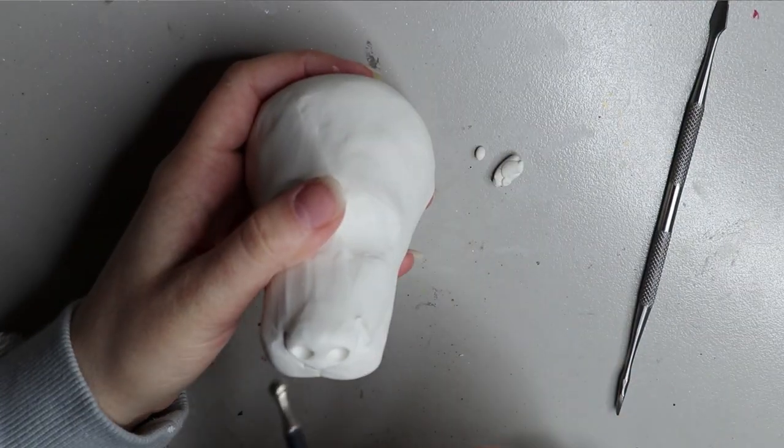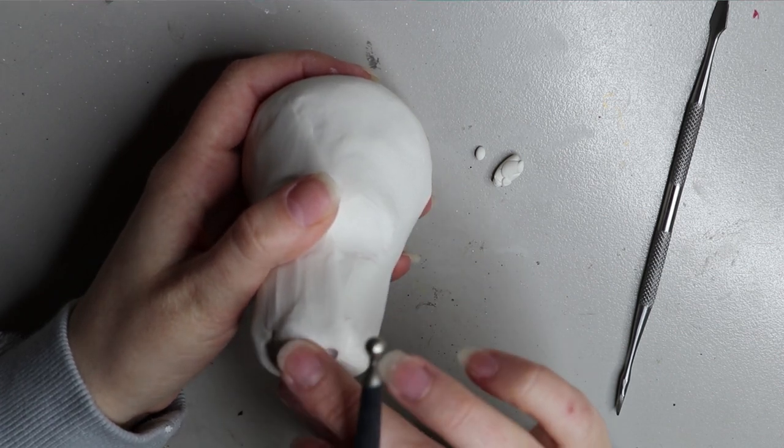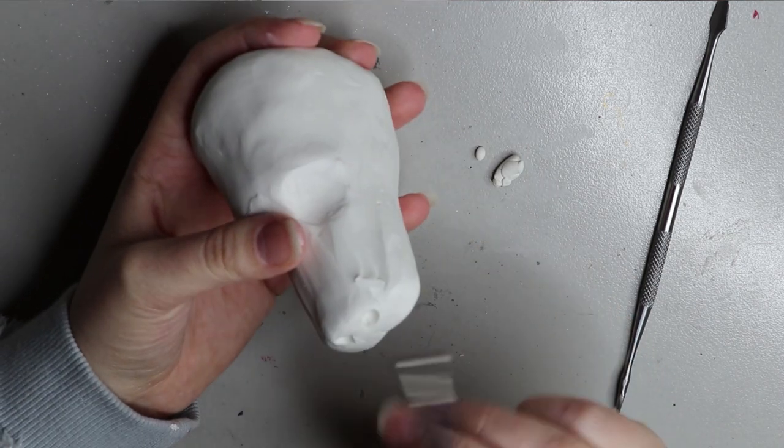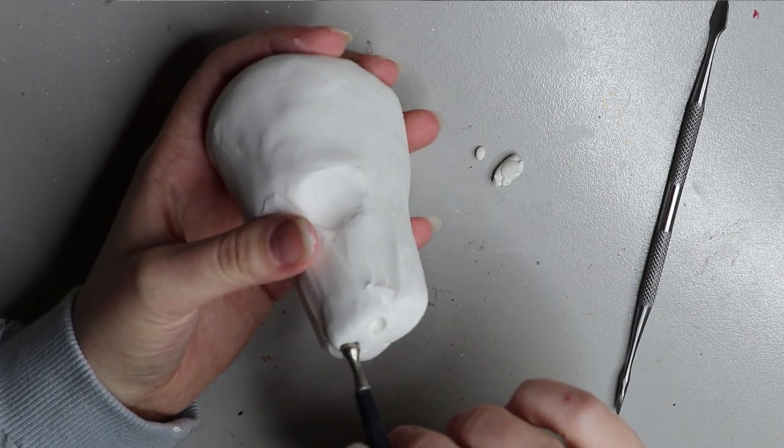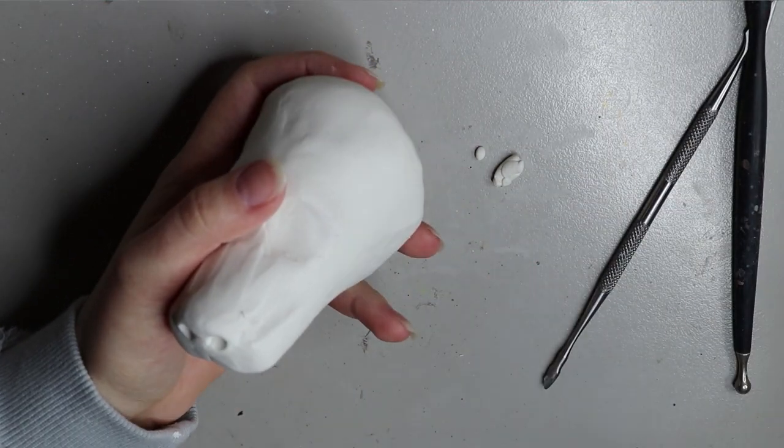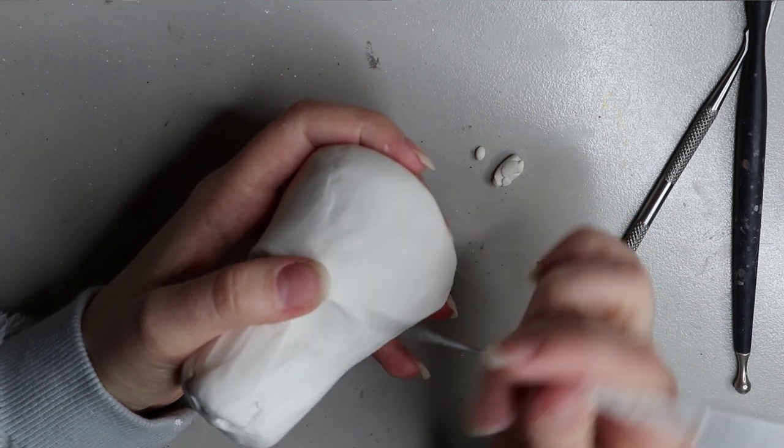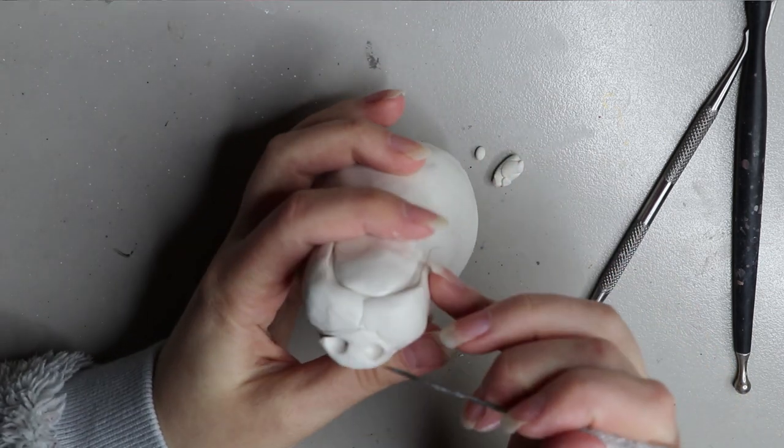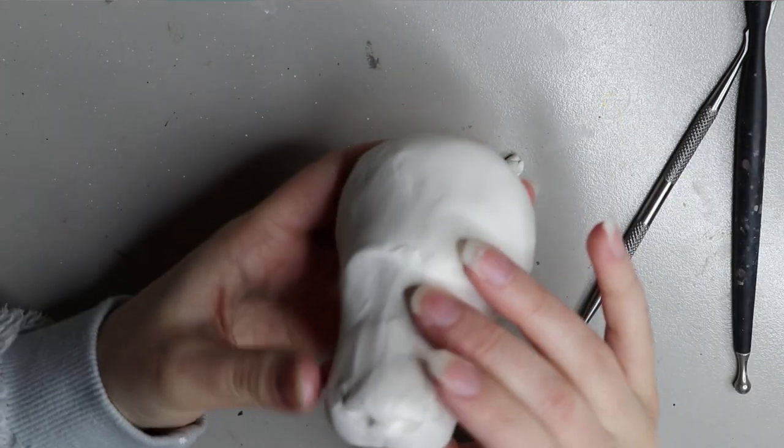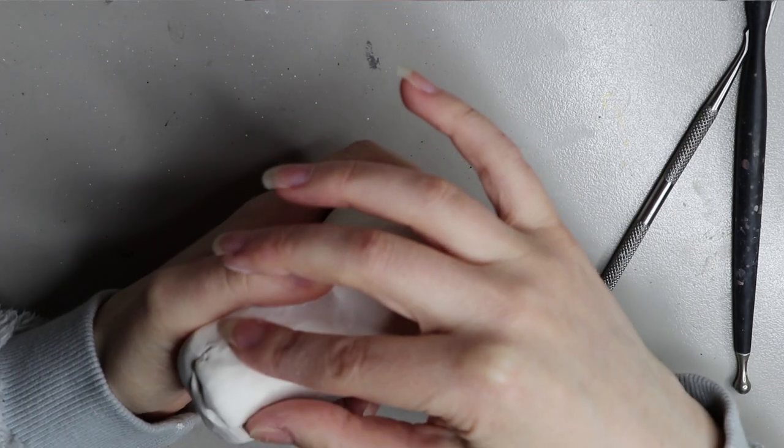These little ball tools are from Sculpey themselves. I found them in a local craft store here in Australia but you can find them online. They're pretty readily available. They are a little bit more pricey than finding some ball tools on eBay or something like that, but I've never had a problem with them. I find them really handy. You can also find all sorts of metal tools on eBay and websites like that as well. You don't have to spend a lot of money to get some good sculpting tools.